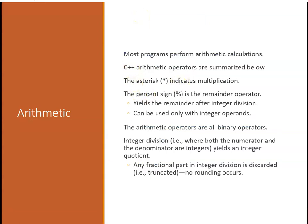Most programs perform some arithmetic. C++ arithmetic operations include the star for multiplication, the percent sign for remainder or modulus operation (which can only be used with integers - there's no real way to use a remainder with floating point or decimal numbers). The arithmetic operators are all binary operators. Integer division, where both numbers are integers, yields an integer quotient - any fractional part of the integer division is discarded or truncated. Remember, you can't divide by zero - that will cause an error.